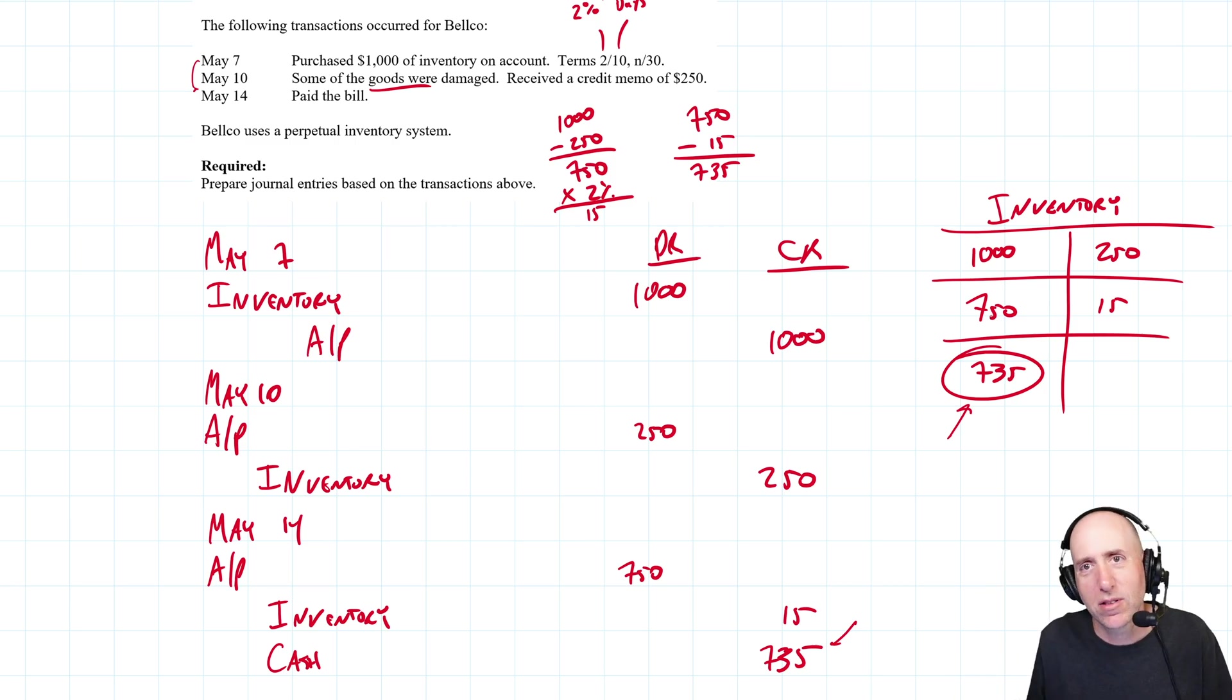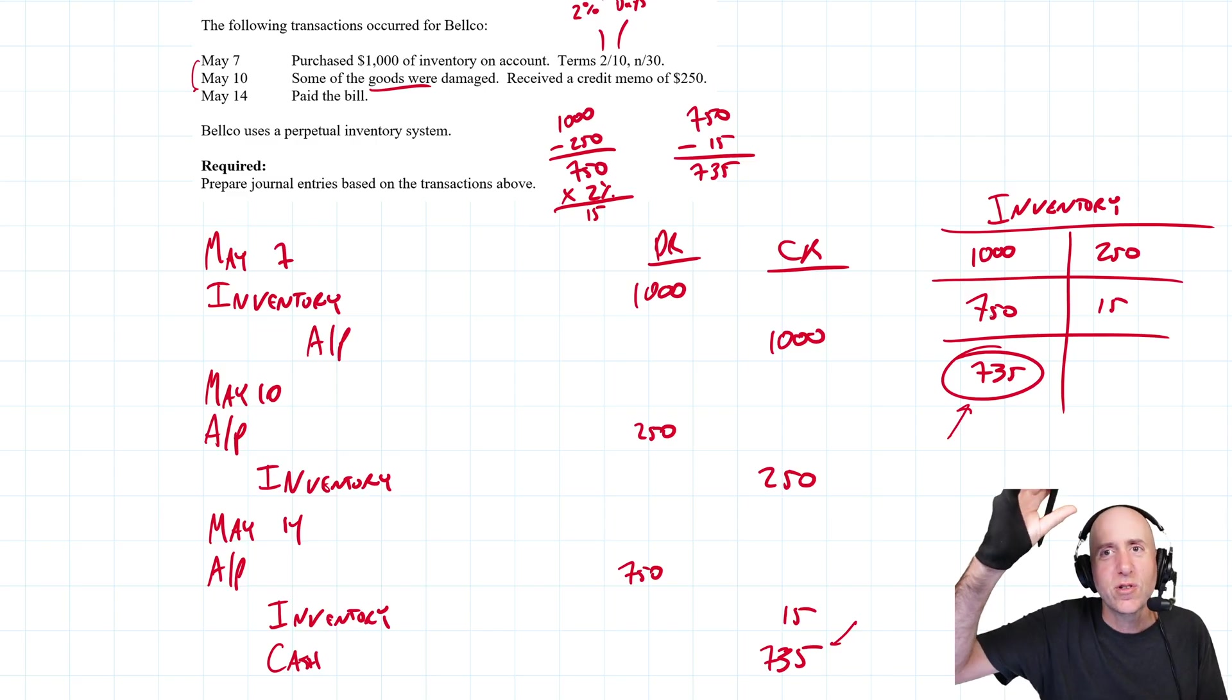The analogy I always give is: you go on the car lot, you buy a $60,000 car, it's the sticker price, you negotiate it down to $50,000. You don't get to debit car for $60,000 because you got a $10,000 discount. No, you just bought a $50,000 car, not a $60,000 car. We bought $735 worth of inventory, not $750, because we paid $735.